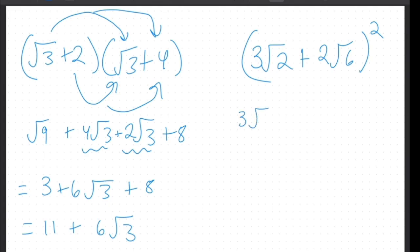So 3 root 2 plus 2 root 6 gets multiplied by itself. So 3 root 2 plus 2 root 6. So to do this, you would do the FOILing. Don't just distribute this in. That is incorrect.